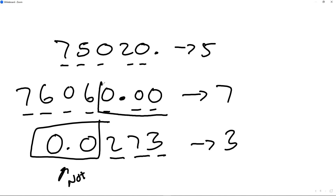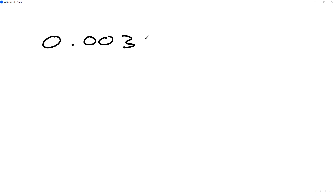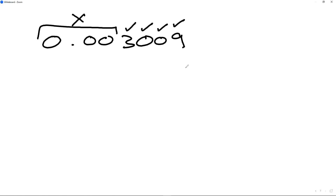To summarize: zeros that come after numbers when there's a decimal are significant, but zeros that come before the numbers are not significant. For example, 0.003009 — the leading zeros are not significant, but the digits 3009 are significant, giving us four significant figures.